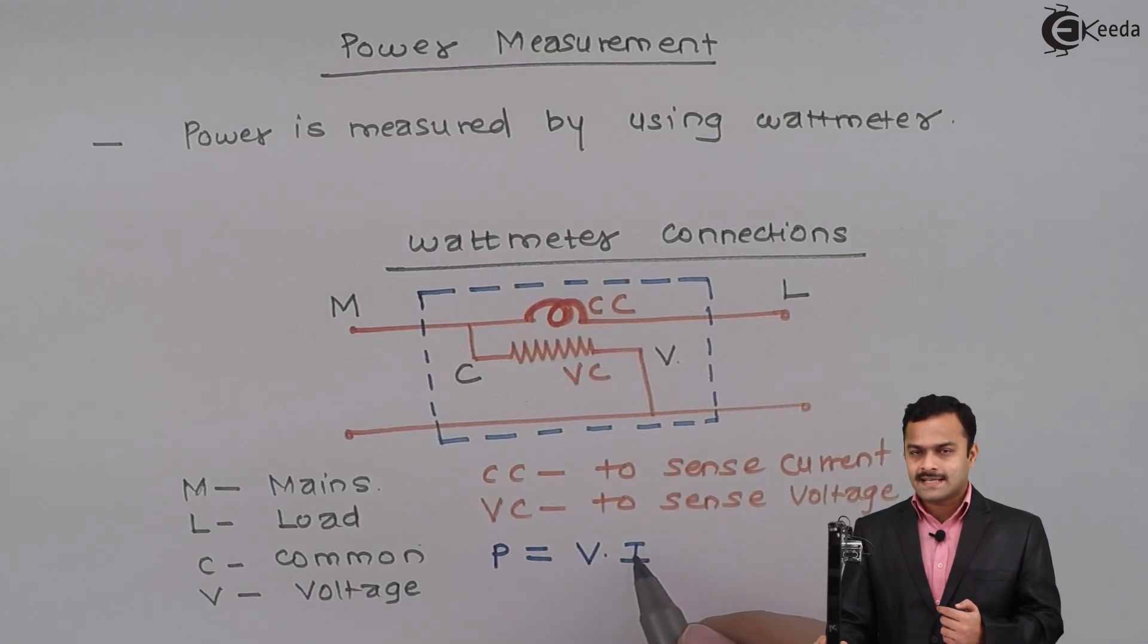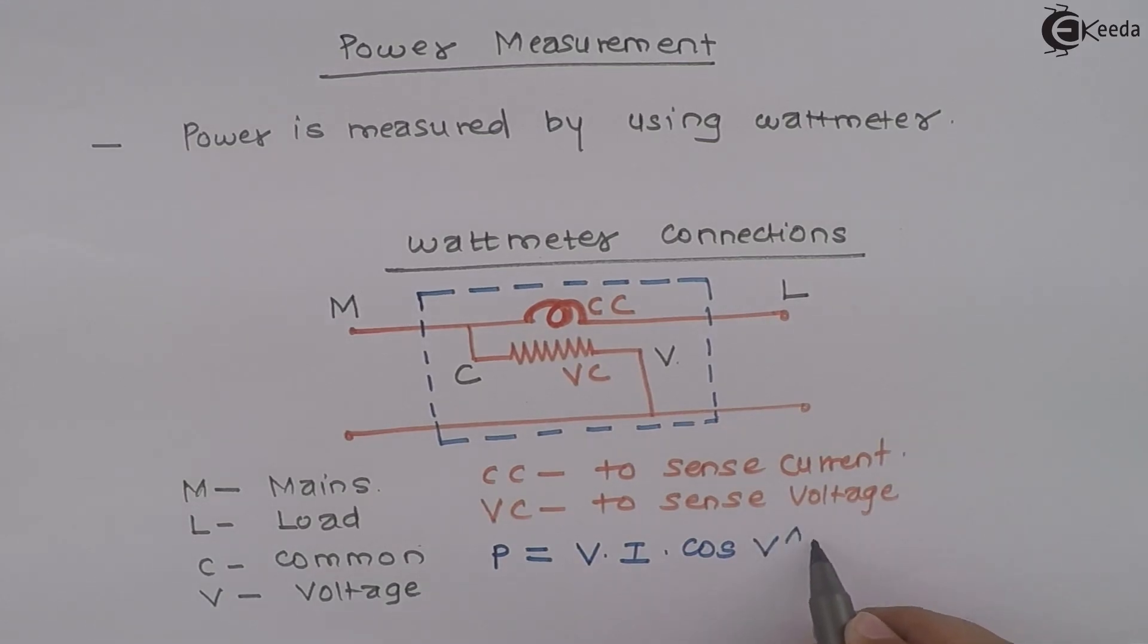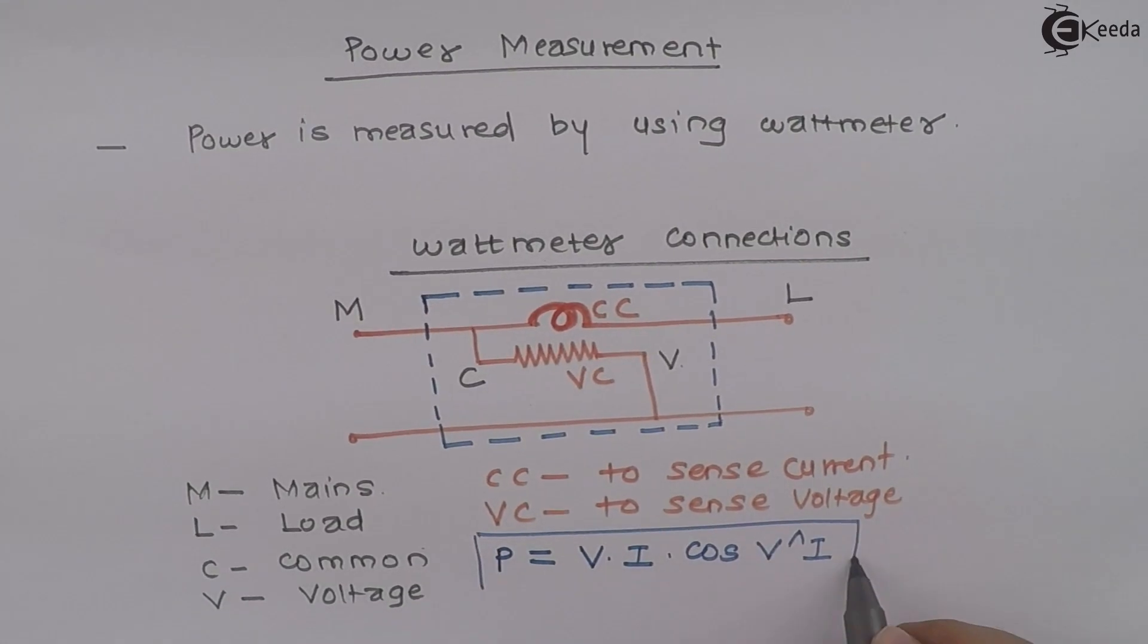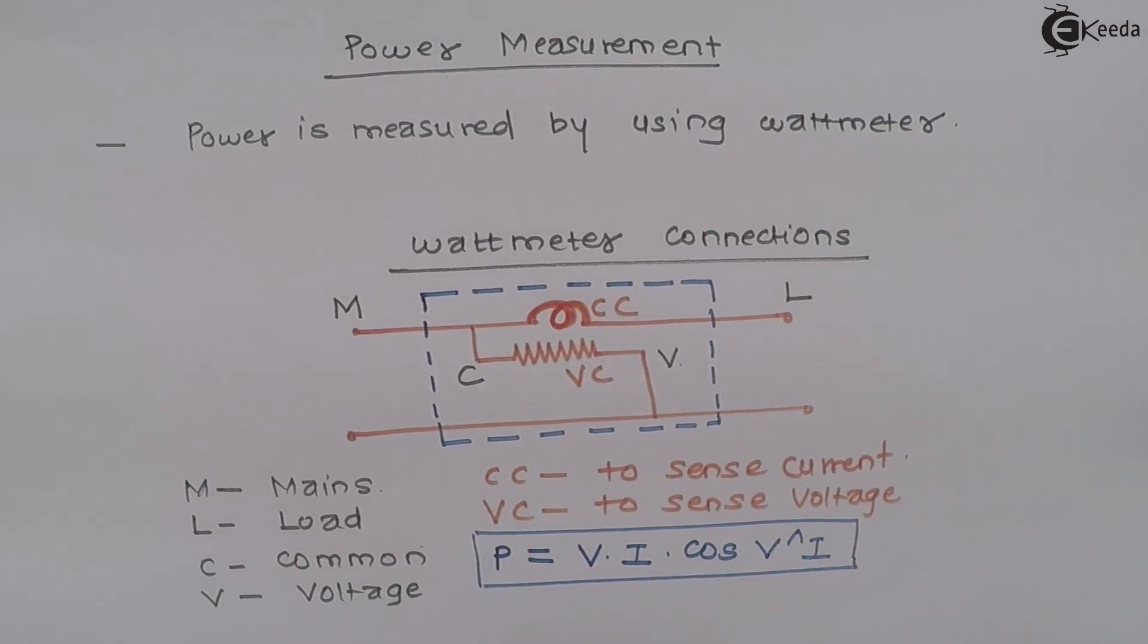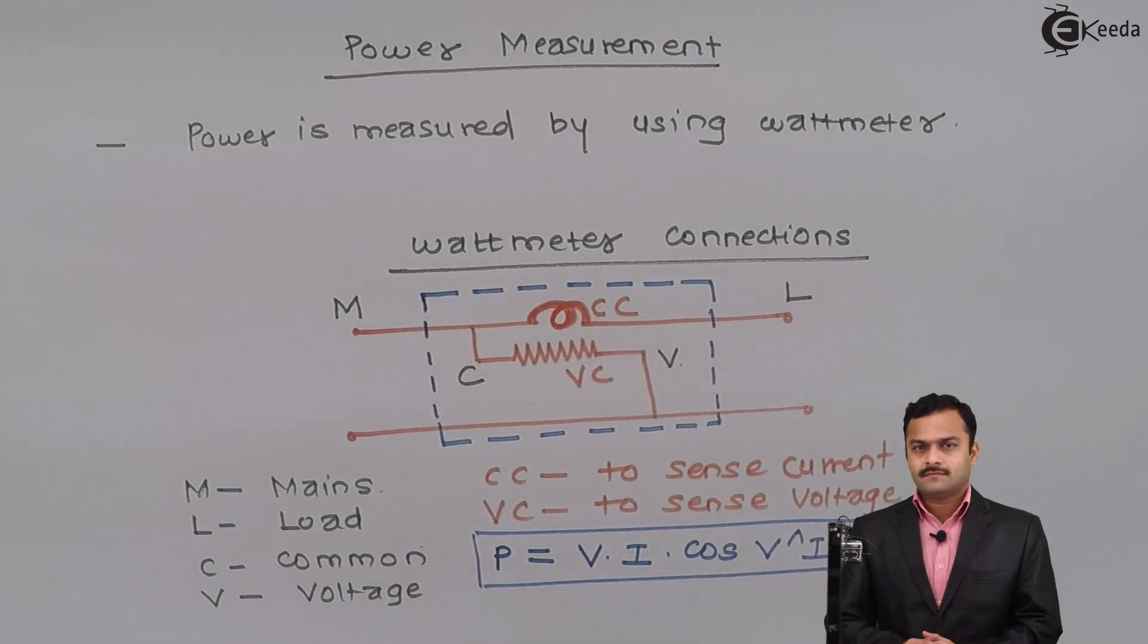Where V is nothing but the voltage sensed by the voltage coil, I is nothing but current sensed by the current coil, multiplied by cosine of the angle between V and I. So the current coil current, voltage coil voltage, and cosine of the angle between these two quantities will give you the wattmeter reading, which is nothing but the power consumed by the circuit. Thank you.